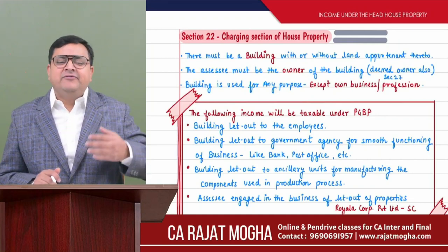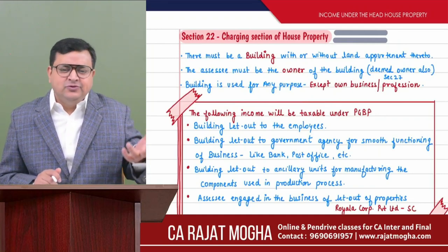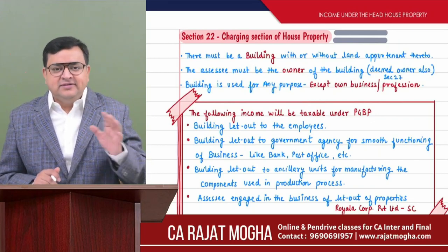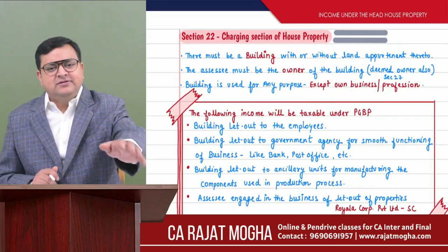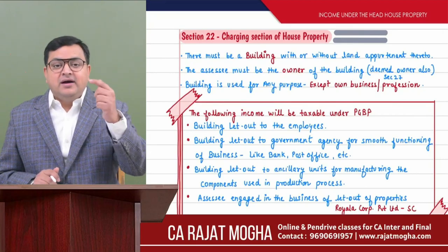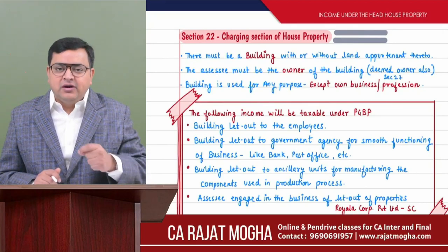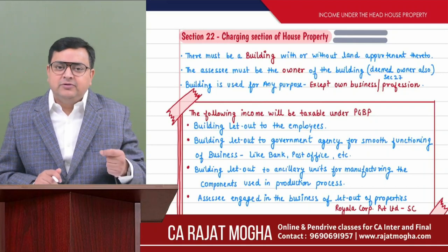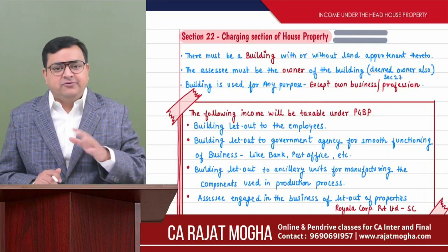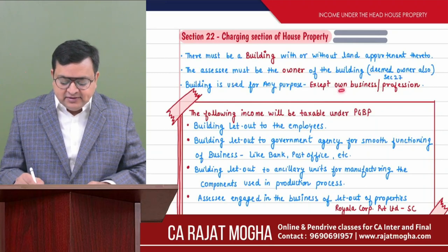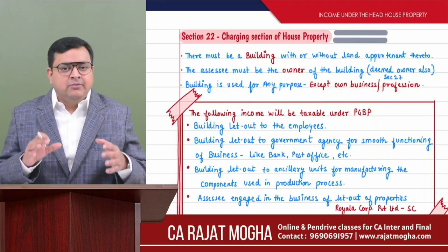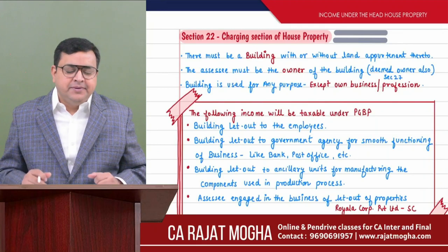If the assessee has let out the property and the tenant is using it for their business, that is okay. The assessee is not using it in business — the tenant is using it in his business. But the person who is the owner or deemed owner of the building should not use it for their own business and profession. Otherwise, any income or expense on that building will go to PGVP.